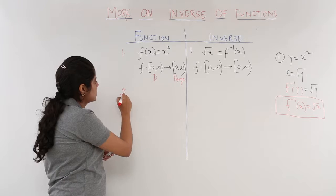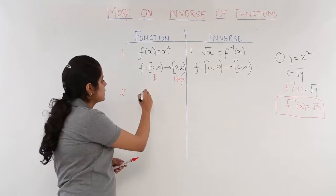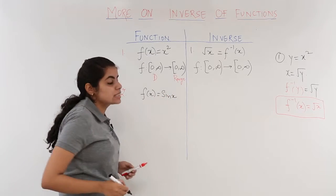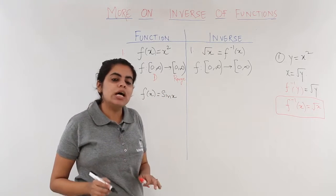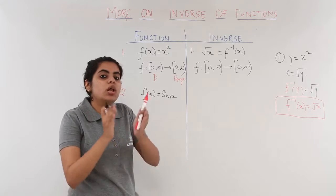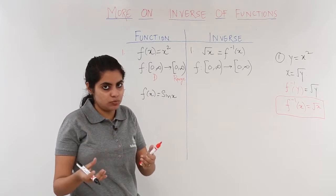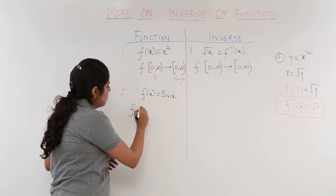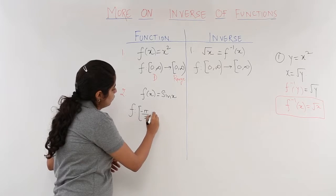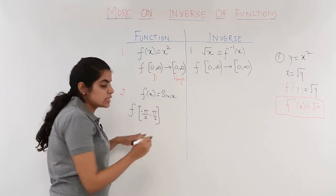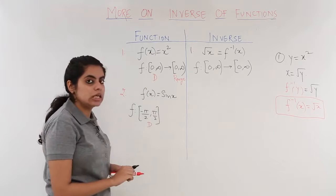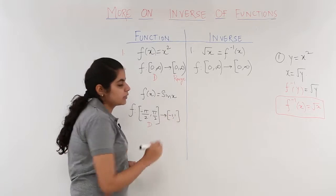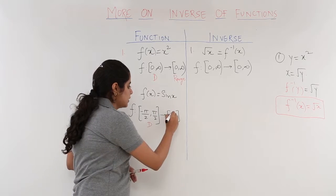Now the second example is a trigonometric function: f(x) = sin x. Sin x always has values ranging from -1 to 1. The domain is -π/2 to π/2, and the range is -1 to 1, inclusive of both.